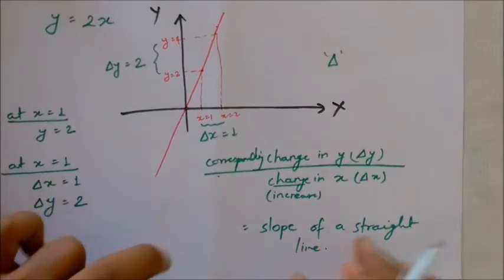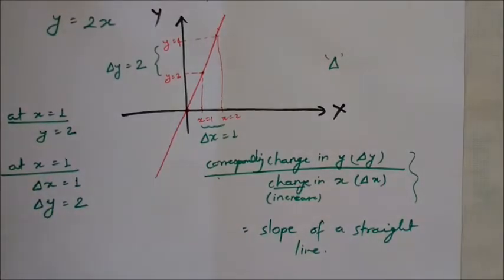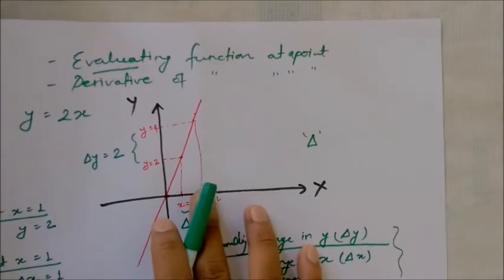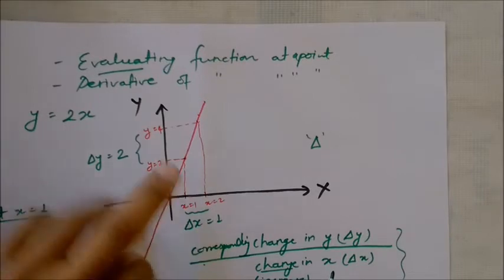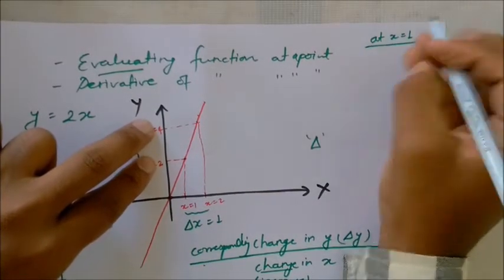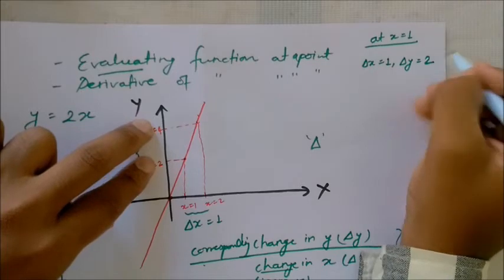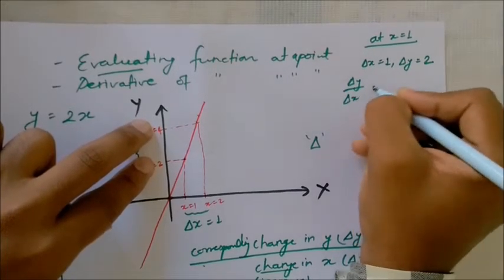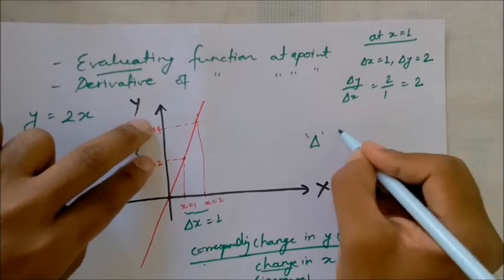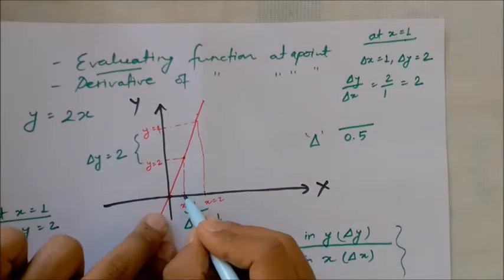Slope of a straight line: change in y divided by change in x. This is the slope of a straight line — it is the same concept. Change in x is 1, change in y is 2, at x equals 1. The ratio — change in y divided by change in x — is 2 divided by 1, which equals 2.